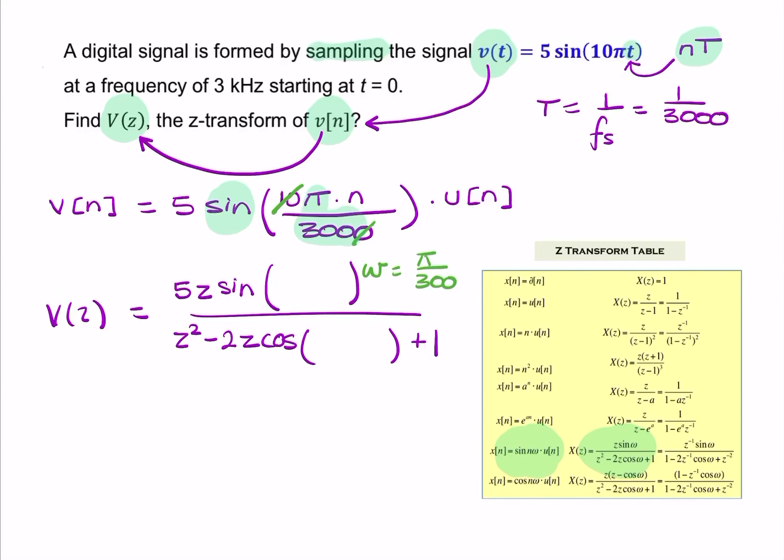So, where omega is this expression here. So, that's π over 300, and that's π over 300.